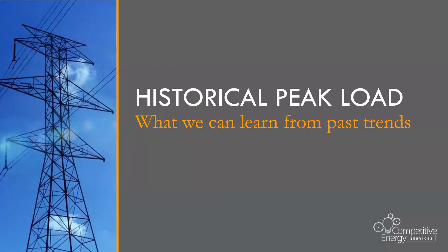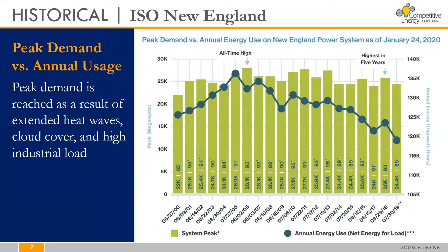Next, let's take a look at historical ISO New England peak load. This graph from ISO New England shows peak demand versus annual electricity usage for the past 20 years. Peak demand — the day and hour which represents the system peak — is shown by the lime green bar graph, while annual electricity usage for the whole ISO New England grid is shown by the dark green line graph. The x-axis shows which day of the year the peak occurred as well as the temperature on that day. Despite the decline in annual electricity usage in recent years, peak demand continues to stay within the range of 24 to 26,000 megawatts during the peak hour. The purpose of this graph is to highlight that there are no clear correlations between total annual electricity usage and peak grid demand — demand and usage are two separate concepts.